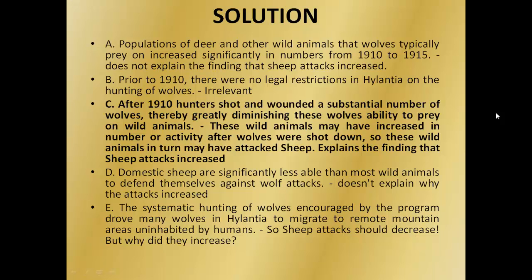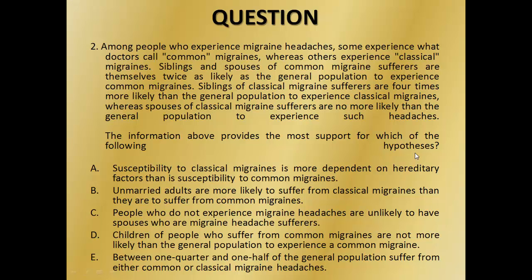Let's look at the other options as well. Option D says domestic sheep are significantly less able than most wild animals to defend themselves against wolf attacks — this doesn't explain why the attacks increased, so D is ruled out. Option E says the systematic hunting of wolves drove many wolves in Halentia to migrate to remote mountain areas uninhabited by humans — sheep attacks should therefore decrease, so this doesn't explain the increase. Our answer is C.